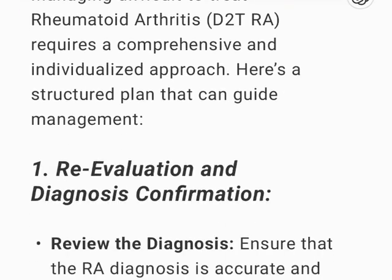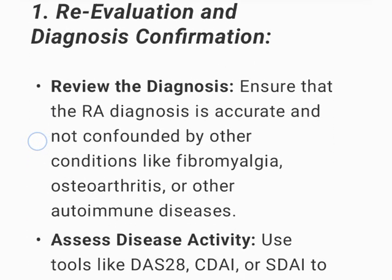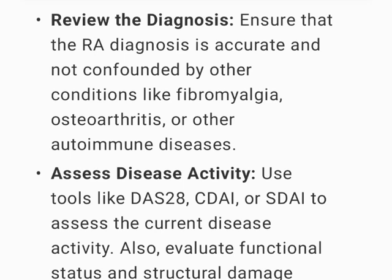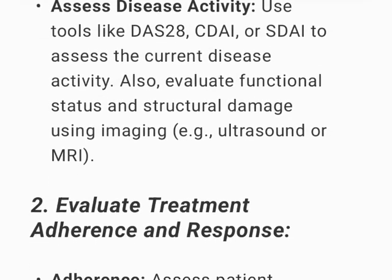Re-evaluation and Diagnosis Confirmation: Review the diagnosis to ensure that the RA diagnosis is accurate and not confounded by other conditions like fibromyalgia, osteoarthritis, or other autoimmune diseases. Assess disease activity using tools like DAS-28, CDAI, or SDAI to assess the current disease activity.